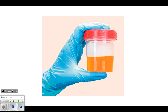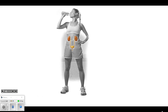Does anyone know what the kidneys do? Filter waste, toxins out of your blood. So it filters your blood, and it also makes urine, right? It filters our blood. Good, you guys know. So basic.